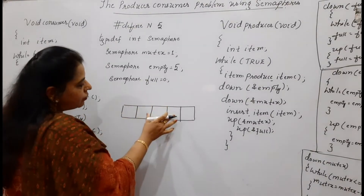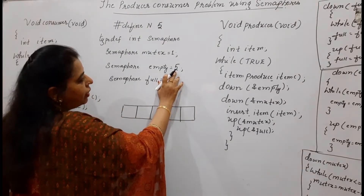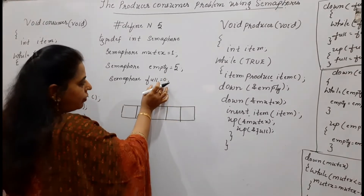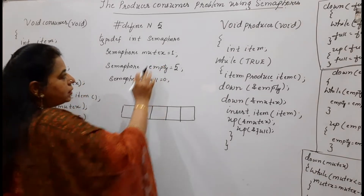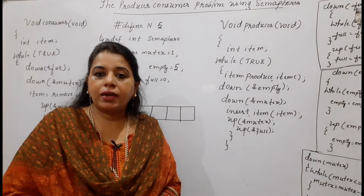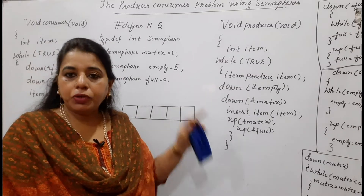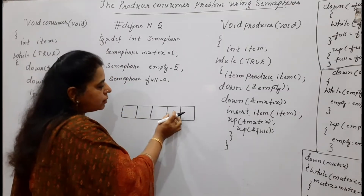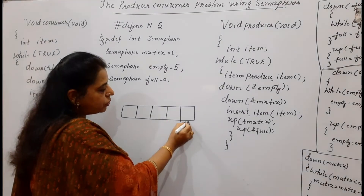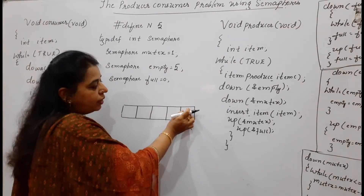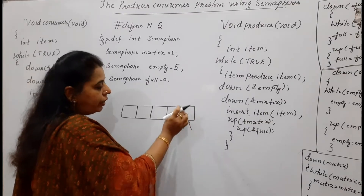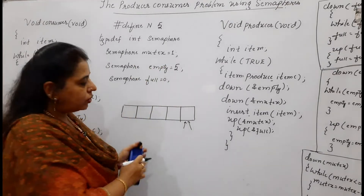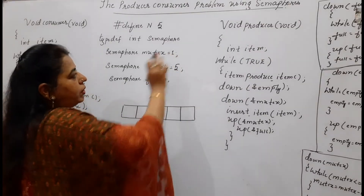Initially all five locations are empty, so we initialize the empty variable to 5. Full is initialized to 0 because nothing is written yet. Mutex is initialized to 1 because we are achieving mutual exclusion to access the critical region. Both producer and consumer should not try to access the same slot at the same time, so we require a semaphore — mutex — as a binary semaphore equal to 1.